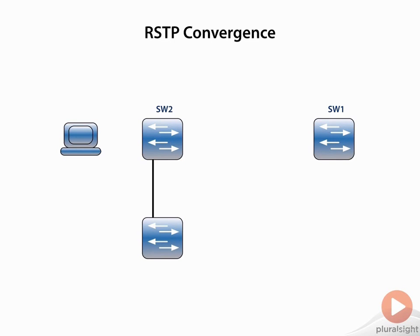This is what it looks like for Rapid Spanning Tree to converge. We're going to talk about some terminology in this example. First, let's connect a PC into Switch 2. That port where we've connected that PC is a dead end, as you can see in this image. So that's going to be called an edge port. Edge ports are not connected to any other switch devices, so we want an edge port to transition immediately into the forwarding state instead of going through those different port states of learning and forwarding.